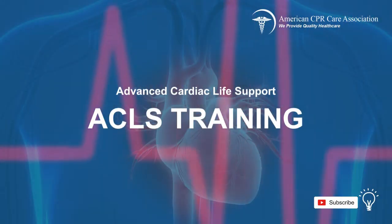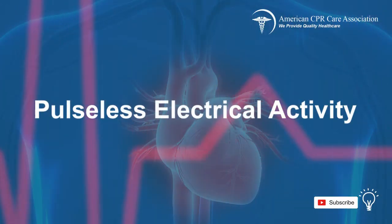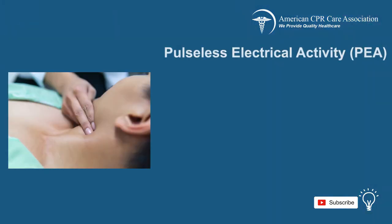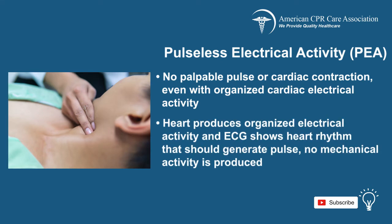Welcome to the Advanced Cardiac Life Support chapter on Pulseless Electrical Activity. Pulseless electrical activity, also known as PEA, is the lack of palpable pulse or cardiac contraction even with organized cardiac electrical activity. Even though the heart is producing organized electrical activity and the ECG displays a heart rhythm that should generate a pulse, no mechanical activity is produced.